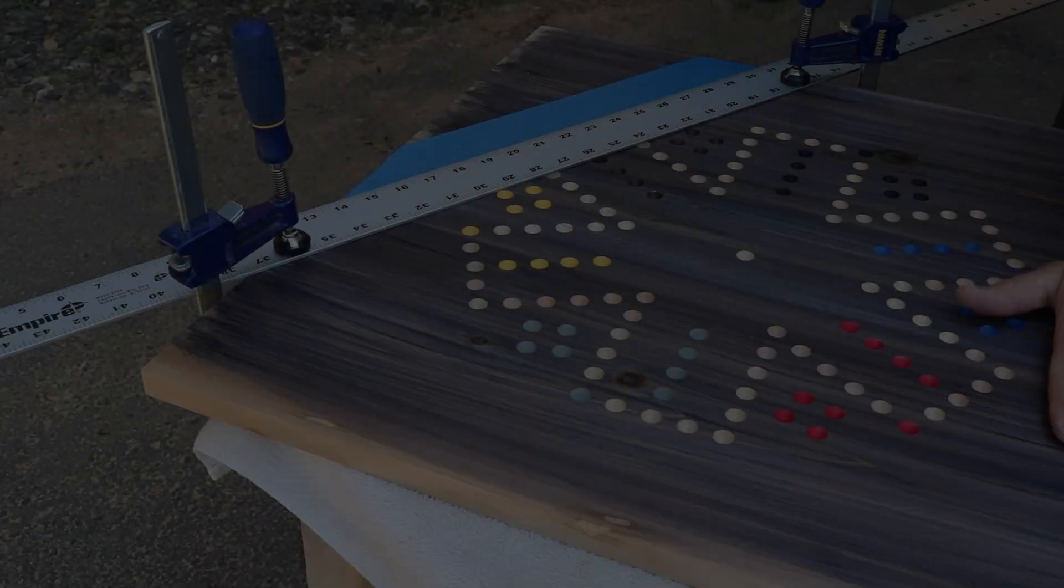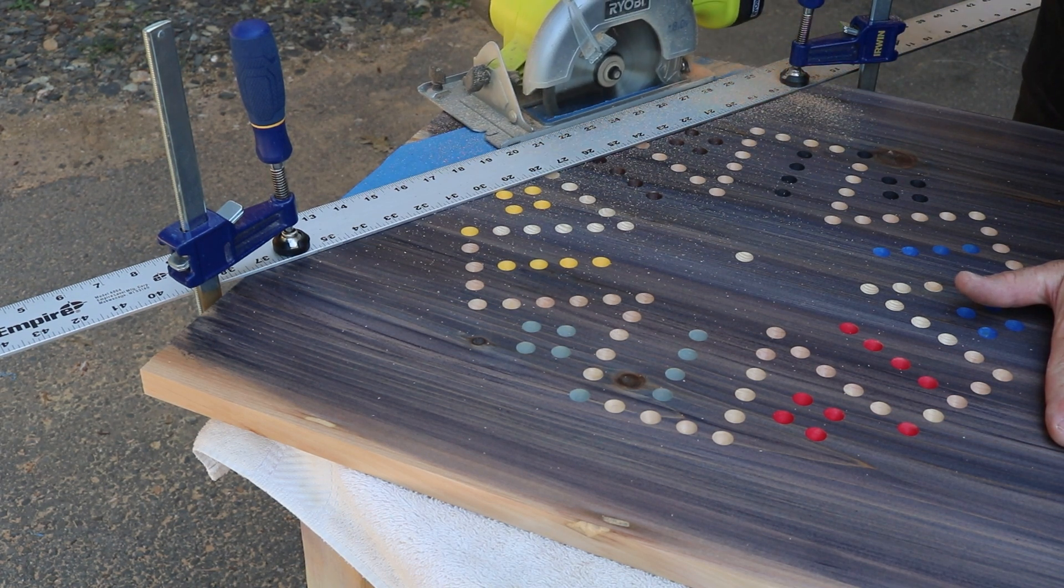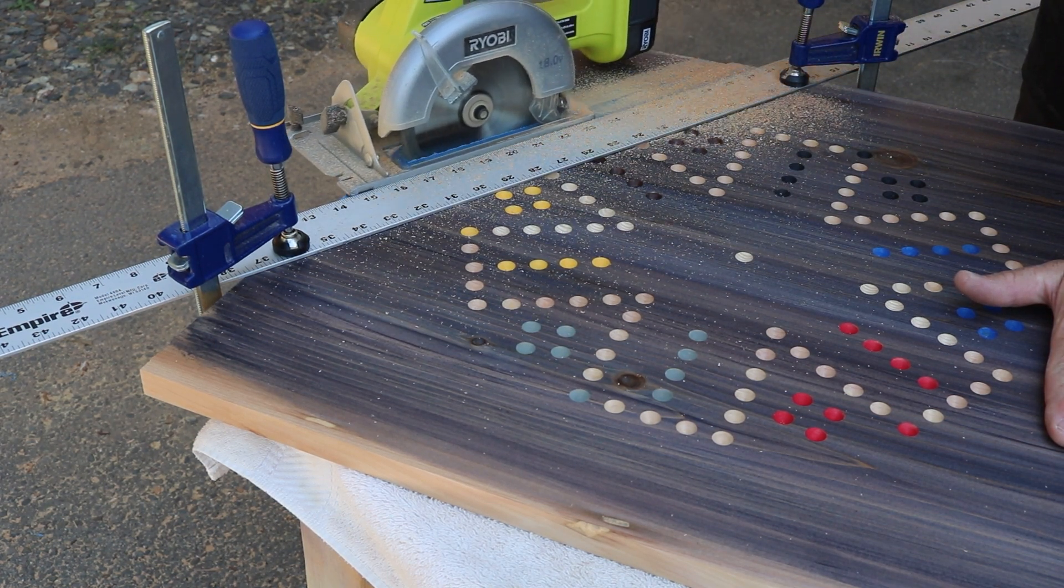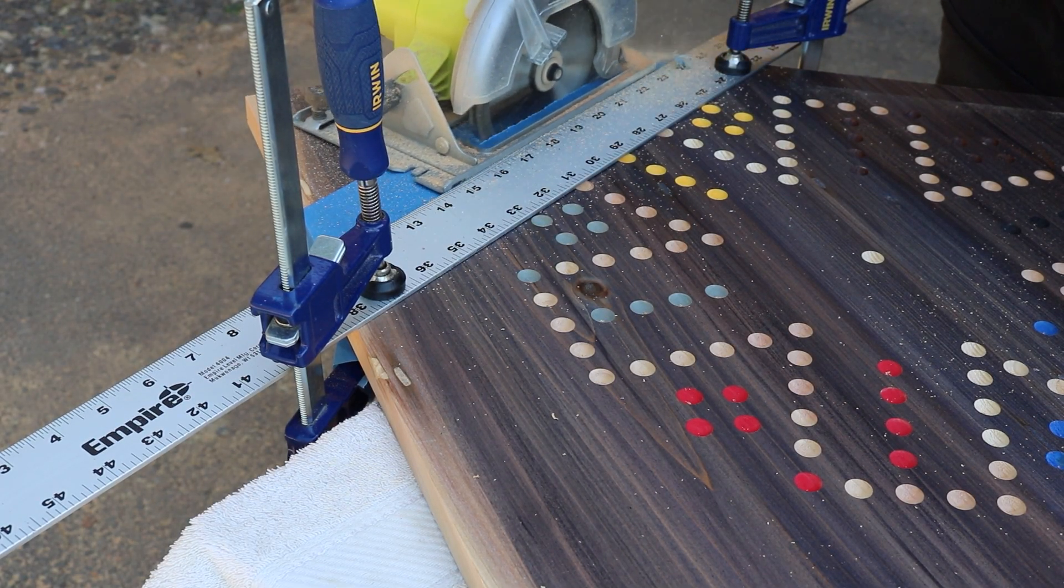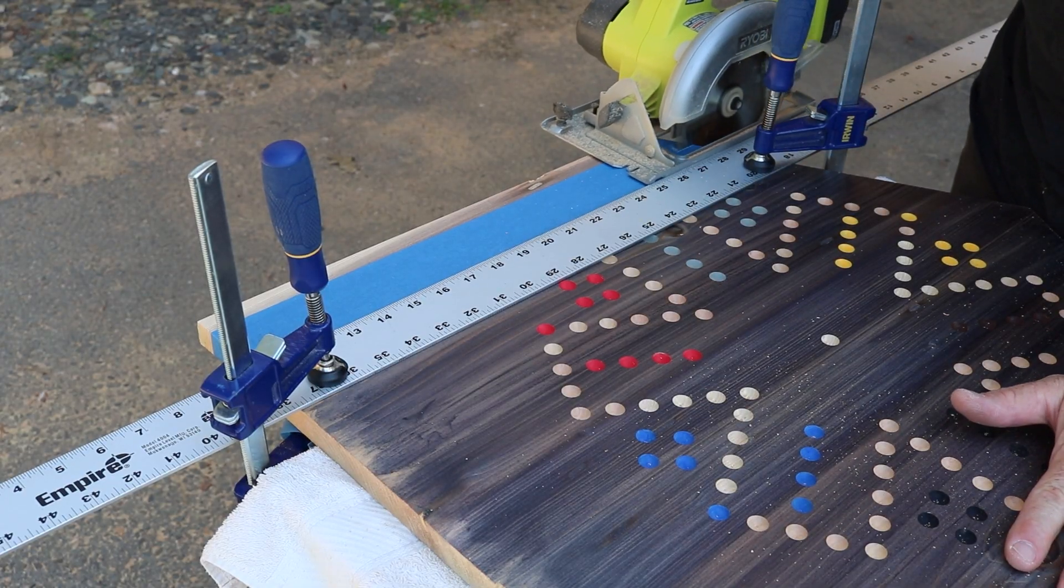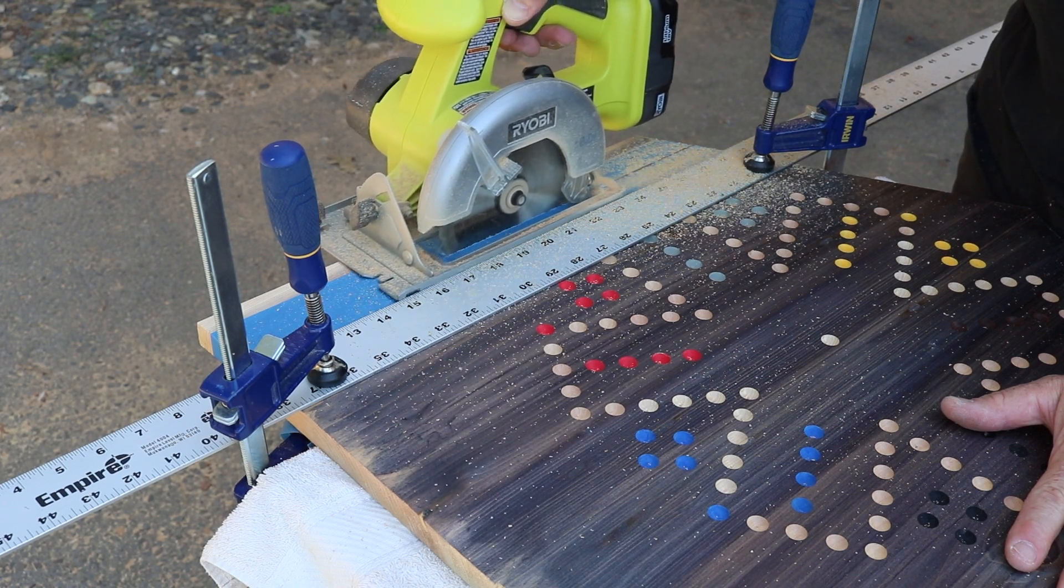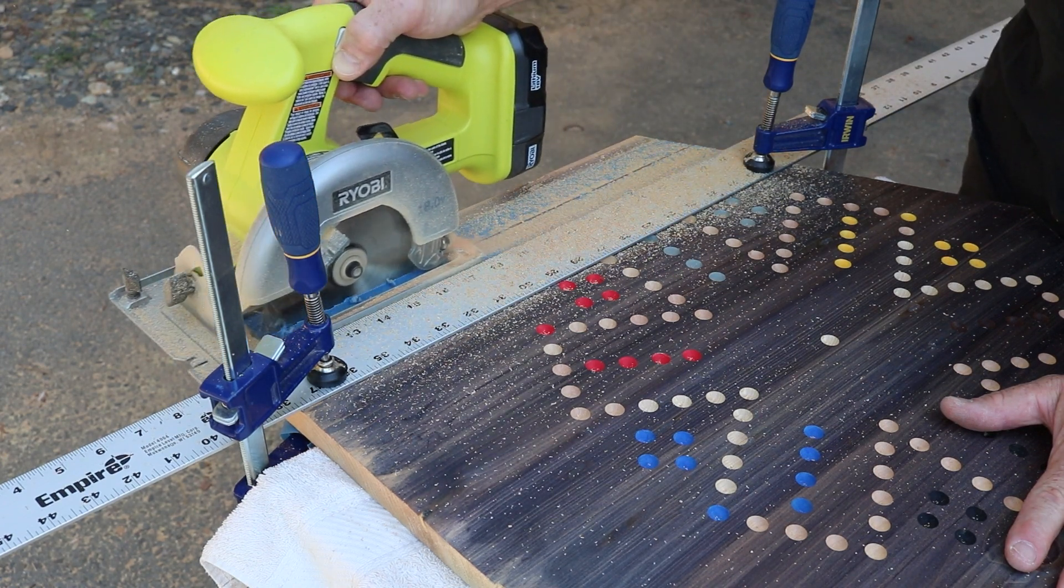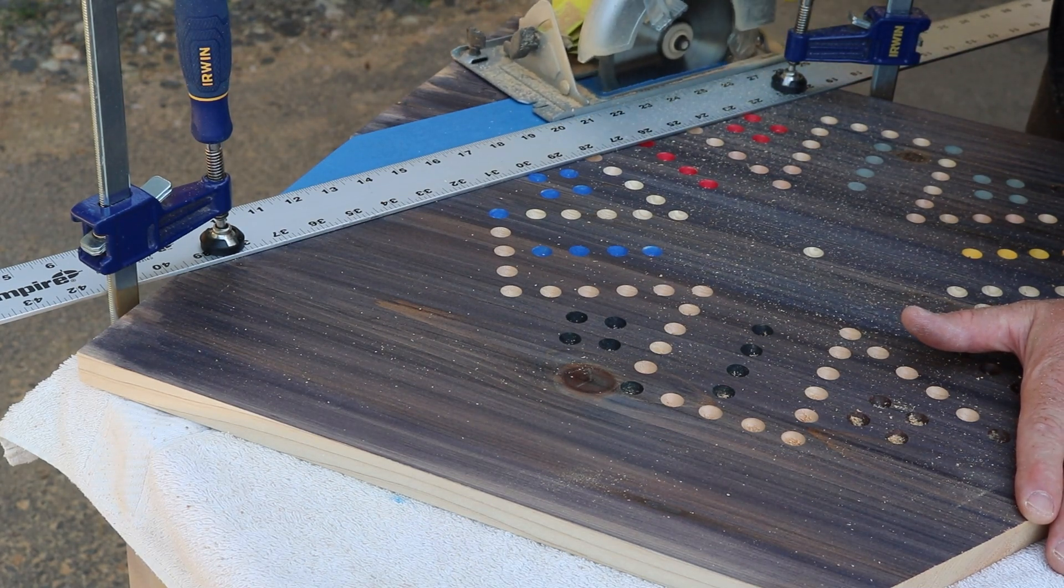In here you'll see as I'm cutting out my sides, I'm using some blue tape. Something I learned a few weeks ago is that it really helps prevent chip out. I was having a problem with it and actually ruined a couple boards because the chip outs were more than a quarter of an inch, so it was greater than what my router bit would take out.